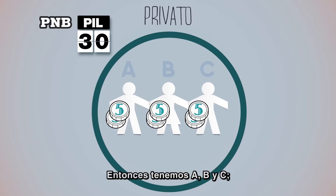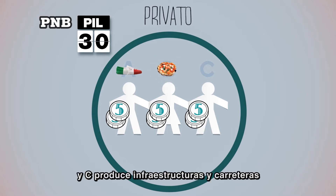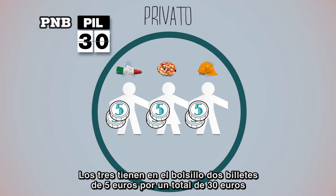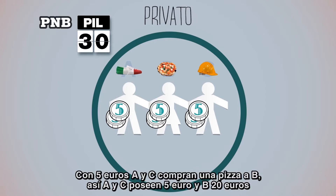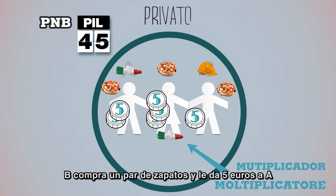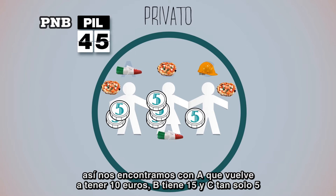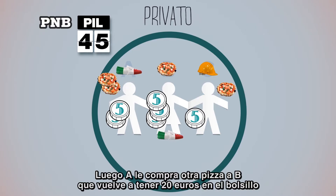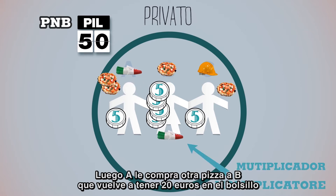Ci sono A, B e C. A produce scarpe, B produce pizze, e C produce infrastrutture e strade. Tutti e tre hanno in tasca due pezzi da 5 euro, per un totale di 30 euro. Con 5 euro, A e C acquistano una pizza da B, così A e C possiedono 5 euro e B 20. B acquista un paio di scarpe e dà 5 euro ad A, e così ci troviamo con A che possiede di nuovo 10 euro, B ne possiede 15 e C soltanto 5. Poi A acquista un'altra pizza da B, il quale si ritrova nuovamente con 20 euro in tasca.